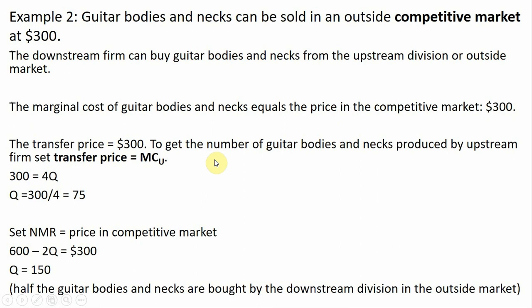The next step is to find the number of guitar bodies and necks produced by the upstream division to sell to the downstream division. To do that, set the competitive market price — the transfer price of $300 — equal to the upstream division's marginal cost. That gives us Q equals 75. So the upstream division will sell 75 guitar bodies and necks to the downstream division at a transfer price of $300.